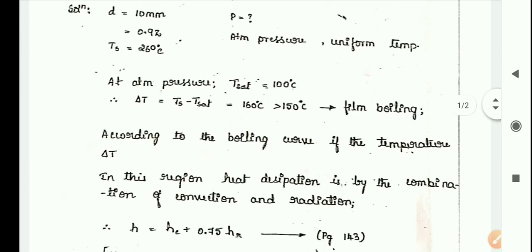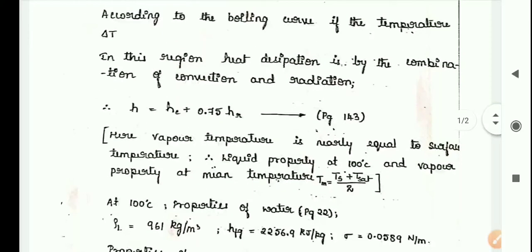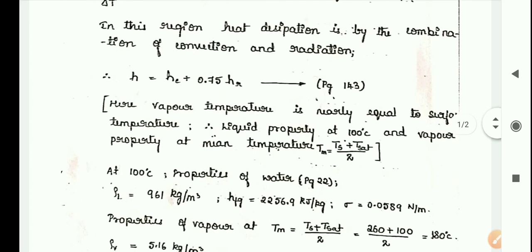For film boiling, the h formula is given at page number 143, where h equals hc plus 0.75 times hr. Here liquid property is at 100 degree Celsius and vapor property is at mean temperature, which is Ts plus Tsat divided by 2.